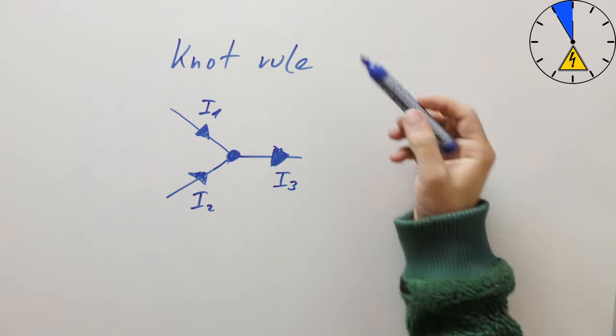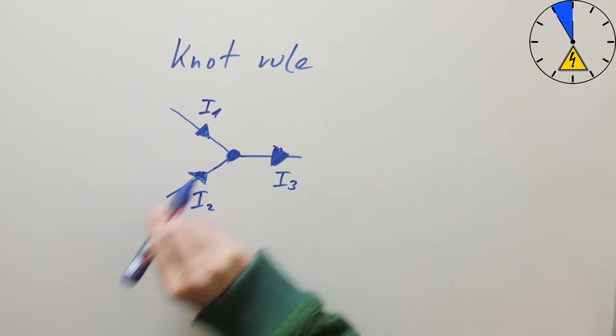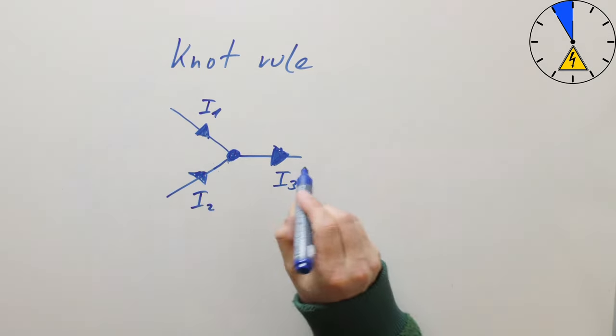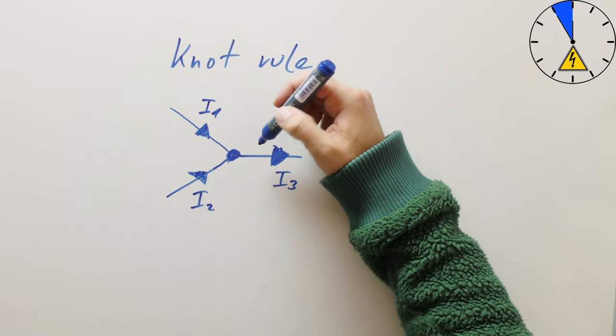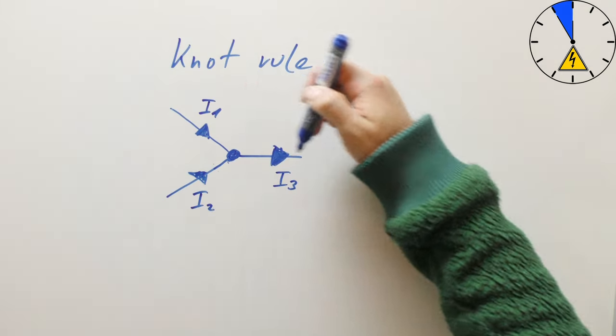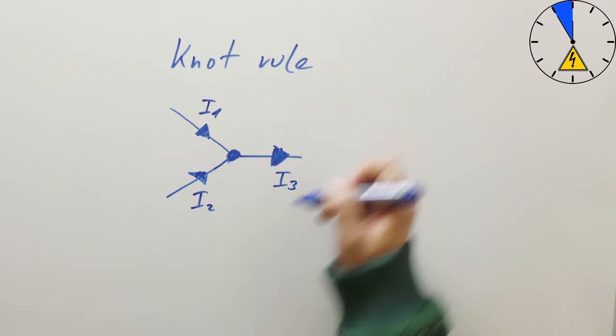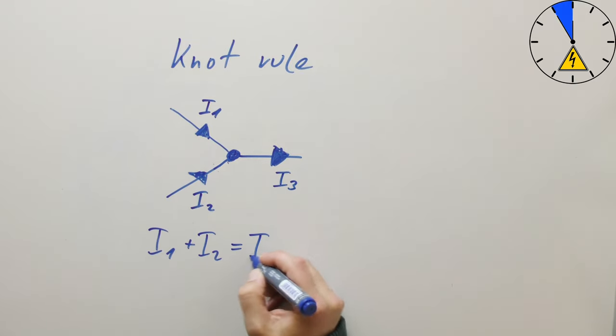And now the knot rule says that all the currents which flow into the knot are exactly the same as the currents which flow outside of the knot. So we can build the following equation: I1 plus I2 equals I3.